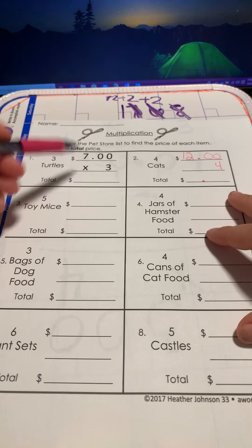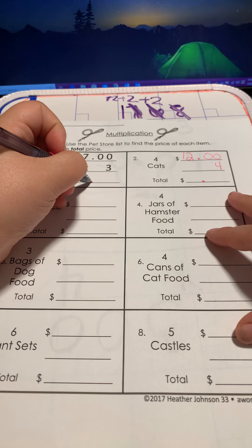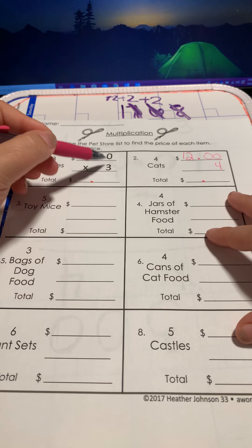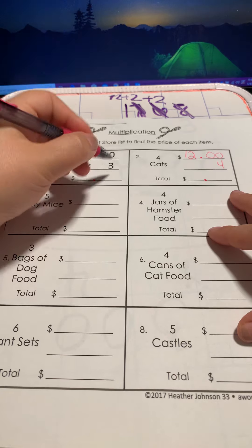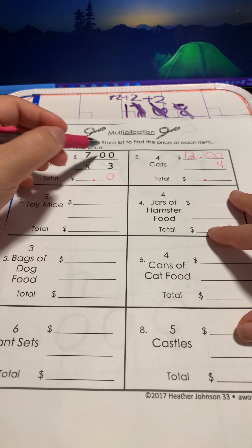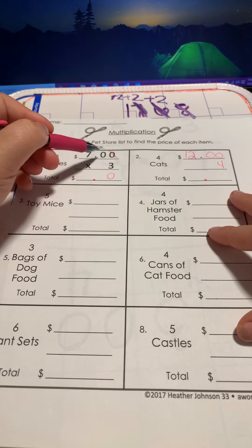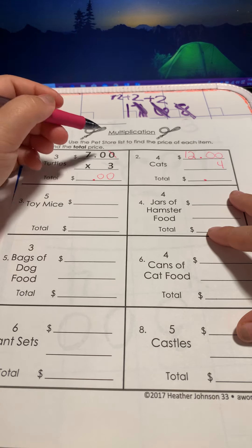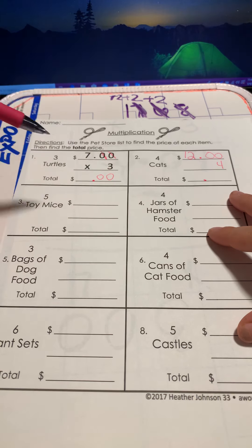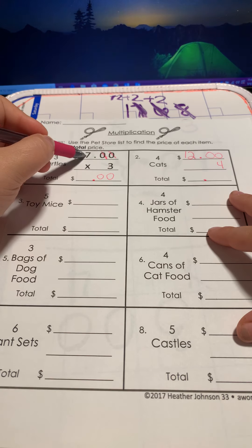Now, three times zero is zero. Cross it out because we already used it. Three times zero is zero. Cross it out, we already used it. Three times seven is 21. There you go.